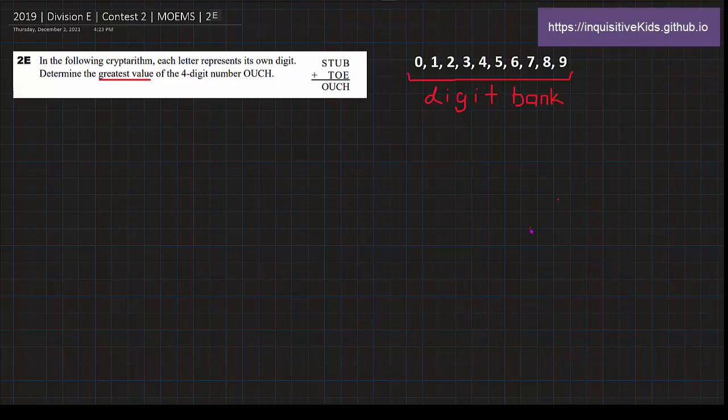If you need that, you can go back and look at it. But now I'm going to start talking about this problem: STU plus TOE equals OUCH. To review what cryptarithms are, it's just equations that are true, but each digit is represented with letters. If it's a different letter, it's a different digit. The same letter is the same digit. Right now it's asking us to determine the greatest value of OUCH, which is the sum in this equation. This is our digit bank, so let's do this.